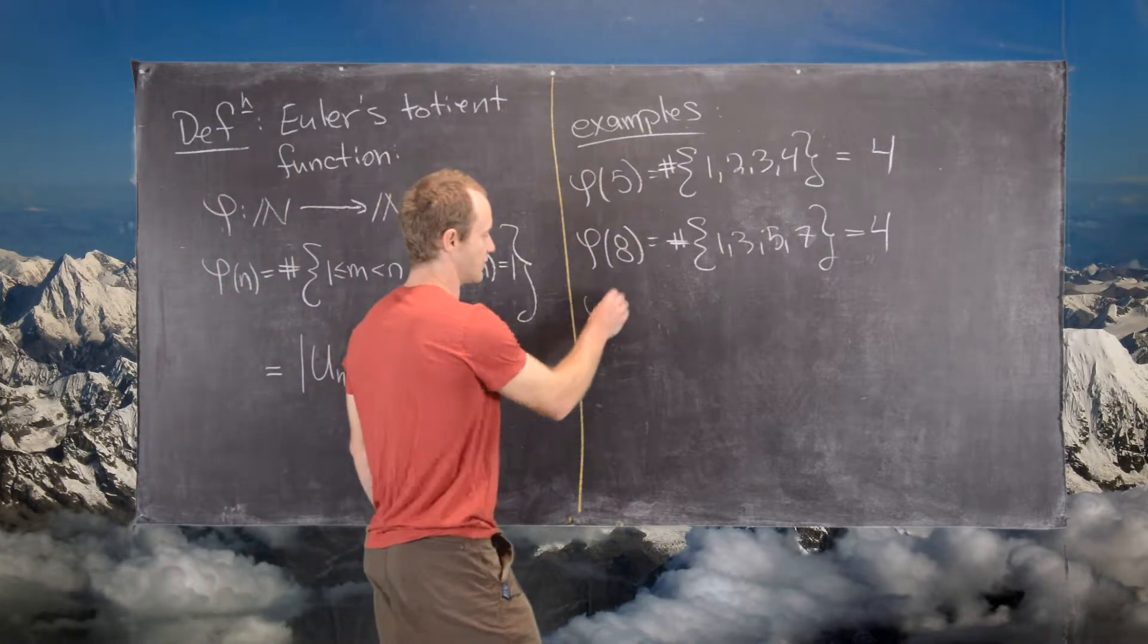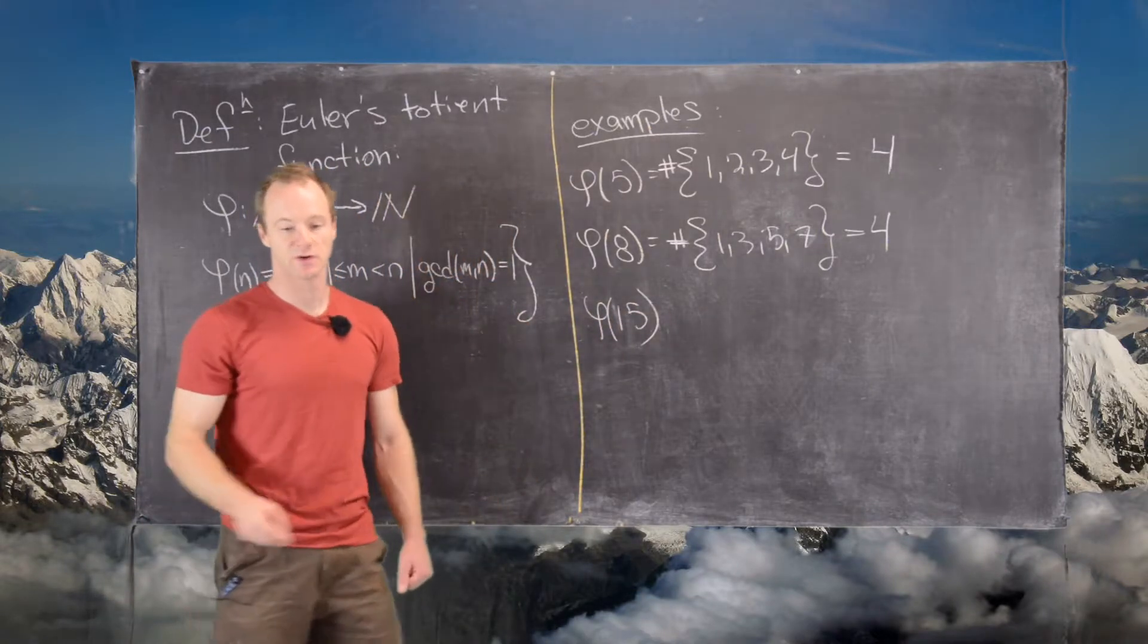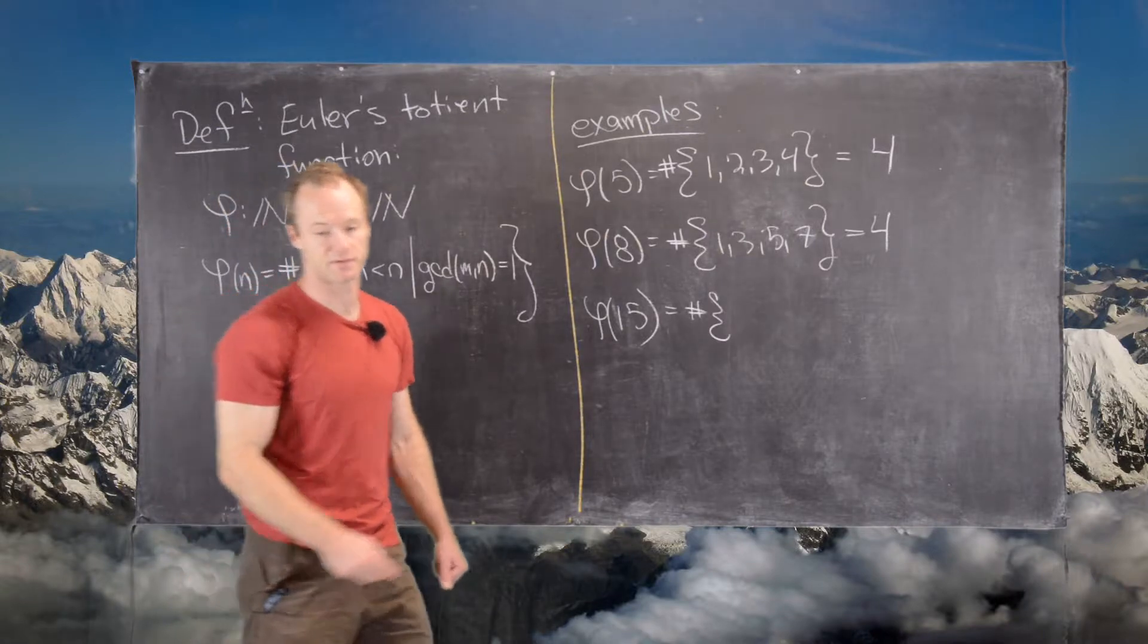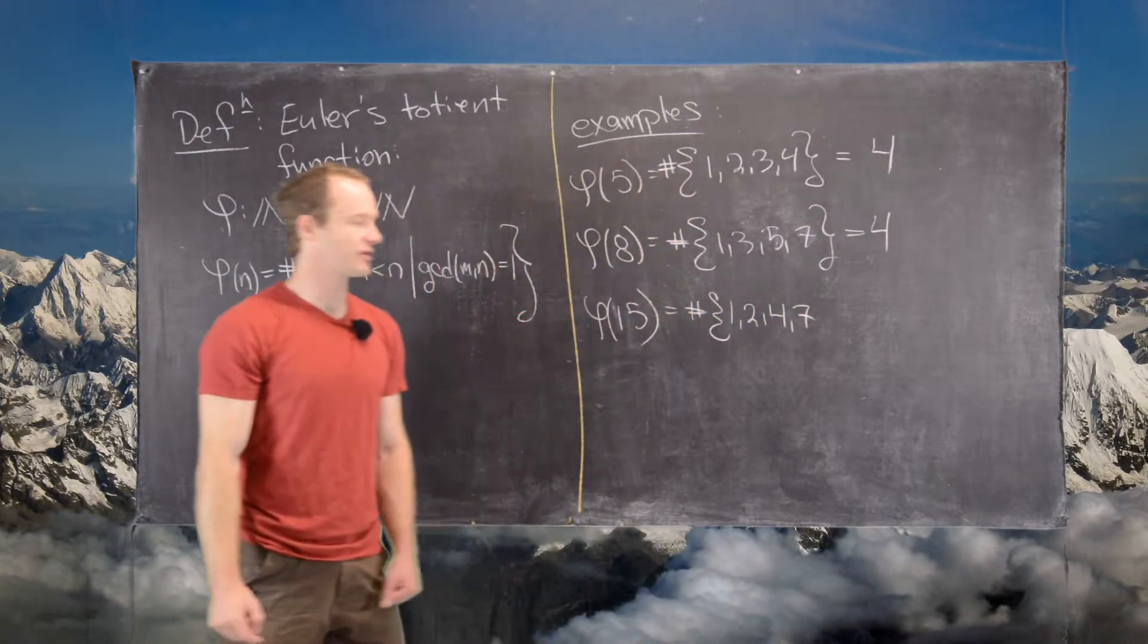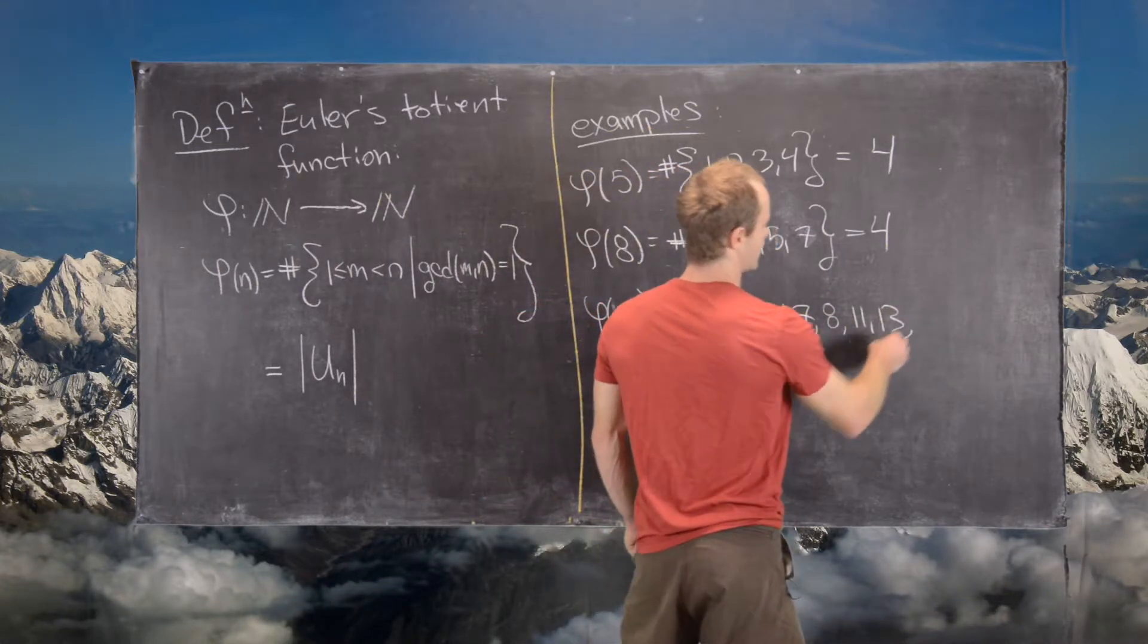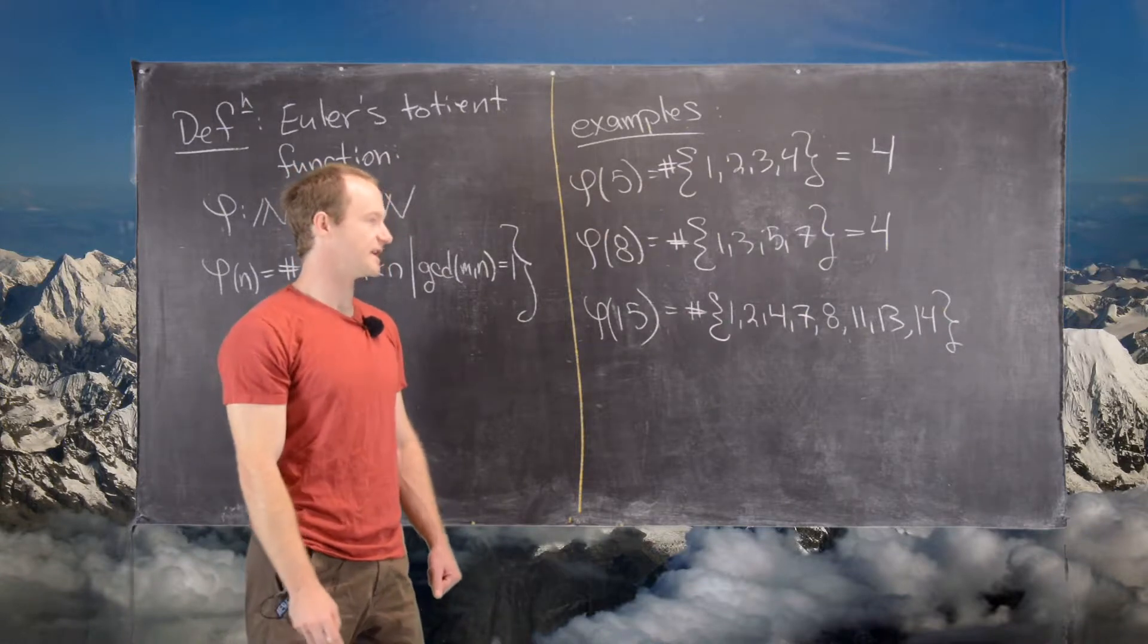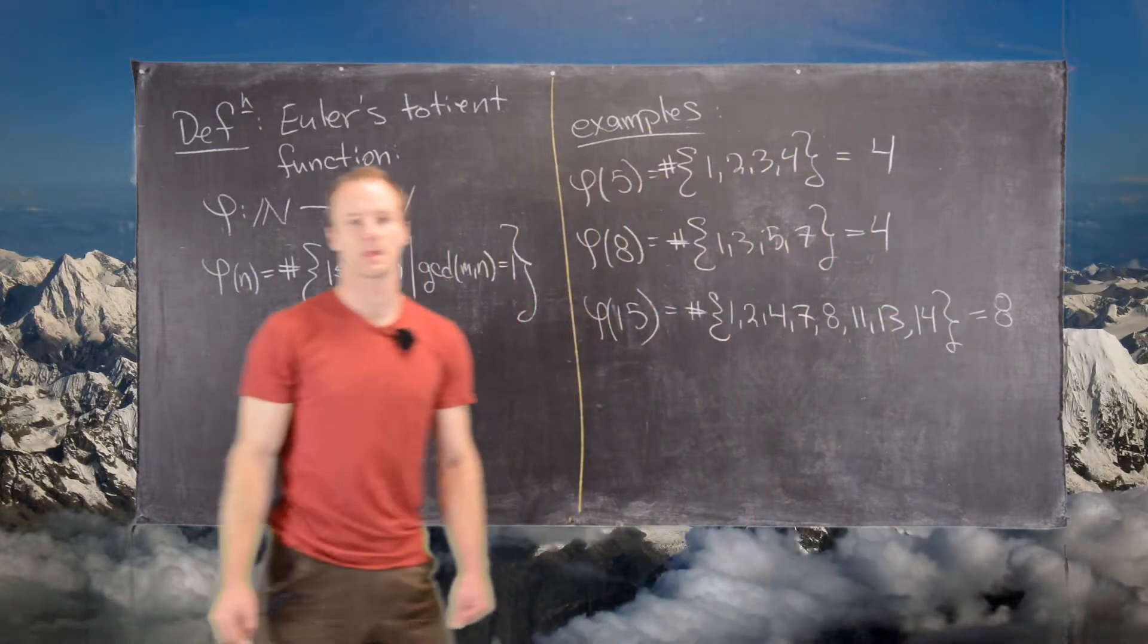So let's look at one more before we prove a result about its value on the prime numbers. So phi of 15. So we want everything relatively prime to 15 that is smaller than 15. So we have 1, 2, 4, 7. So notice we skipped 3, 5, and 6. 8, 11, 13, and then finally 14. So notice we had to skip 10, we had to skip 12, we had to skip 9, and so on. So if you count this up, you get 8.